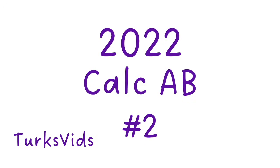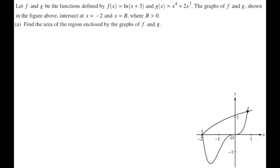In this video, we're going to do number two from the 2022 Calc AB exam — it's the area/volume problem. Let f and g be defined by f of x equals the natural log of x plus 3, and g of x equals x to the fourth plus 2x cubed. The graphs of f and g intersect at negative 2 and at x equals b, where b is greater than 0.